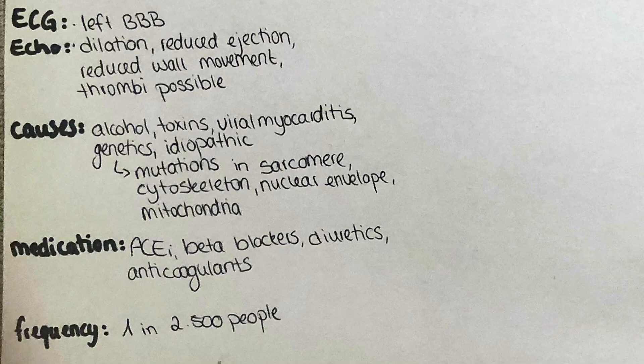In the ECG we can see a left bundle branch block, and in the echocardiography we can observe dilation of the left atrium and ventricle, reduced left ventricular ejection fraction, reduced movement of the cardiac walls, and often also thrombi in the ventricles and atria.